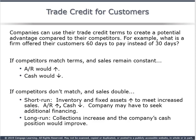If competitors do not match — meaning they're not mimicking our actions — and our sales were to double as well, we would see inventory and fixed assets increase to reflect that increase in sales, and accounts receivable would go up while cash would go down in the short run. However, in the long run, if we could maintain that 60-day payment term for our customers while none of our competitors did that, we would actually see more cash come in because of the sales increase.